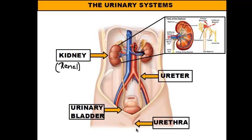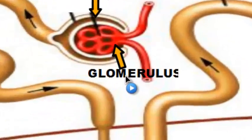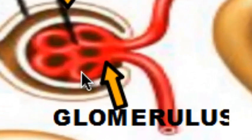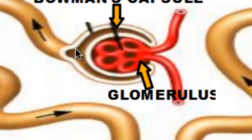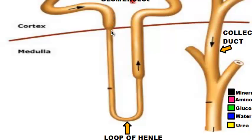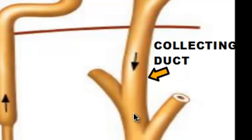Let's take a look at the nephrons to see how urine is produced. This structure here is called a nephron — remember, there are tons of these inside the kidney. There are some basic structures to it: you have the glomerulus, which is this ball of capillaries; you have Bowman's capsule, which is the structure that the ball of capillaries sits in; you have the loop of Henle, where filtration takes place; and then the collecting duct, where urine is collected to be sent out of the kidney.